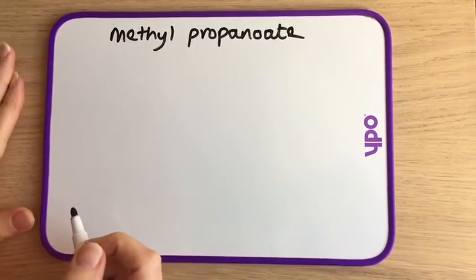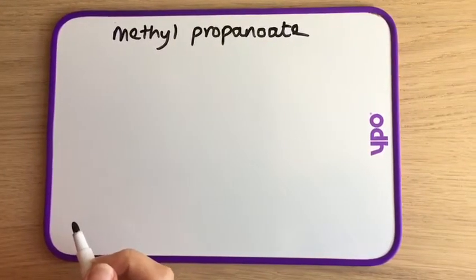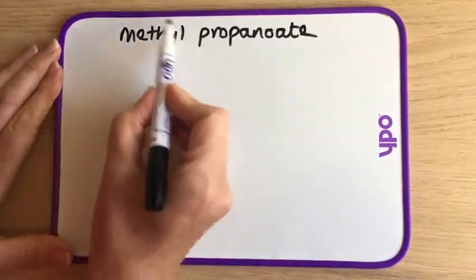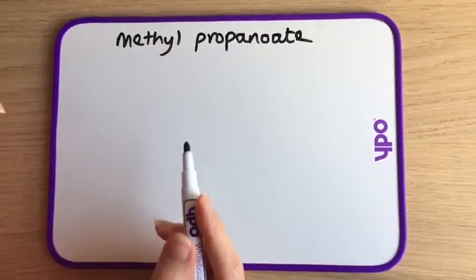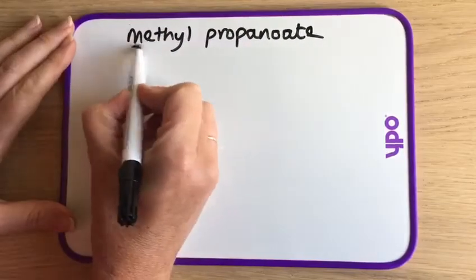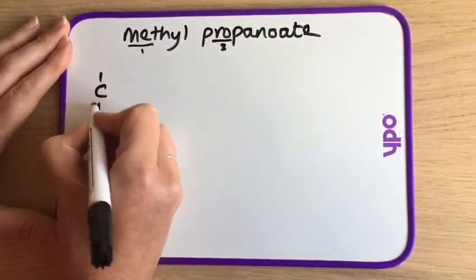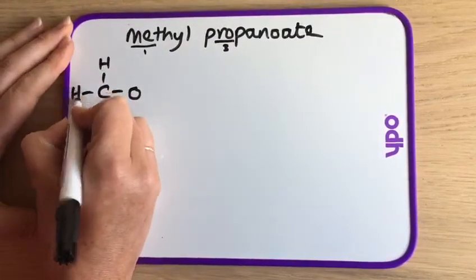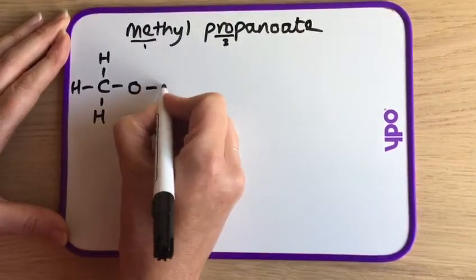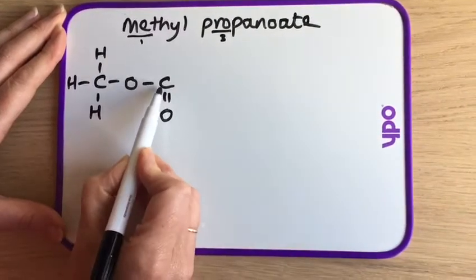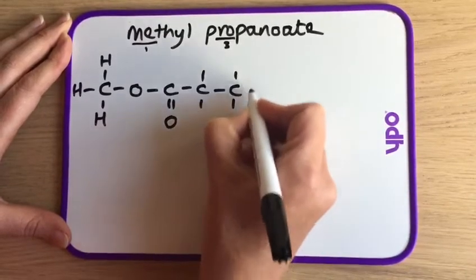Acid-catalyzed hydrolysis of an ester — this example uses methyl propanoate. The methyl comes from the alcohol and the propanoate from the carboxylic acid. Meth gives us one carbon and prop gives us three. So we start with our methyl group — the oxygen is there from the alcohol — and then propanoate with C double bond O as carbon number one, and we need two more, so we can draw them in like that.